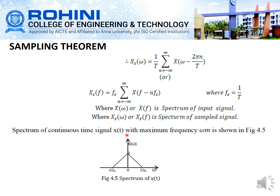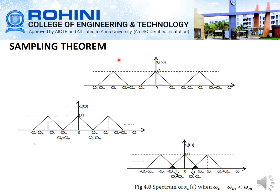The spectrum of the continuous-time signal x(t) with maximum frequency ω_m is shown in the figure. This spectrum has maximum frequency ω_m, with components at −ω_m to +ω_m and −ω_s to +ω_s. When sampling satisfies fs greater than or equal to 2·fm, we can reconstruct the signal at the receiver end. If this condition is not satisfied, we get an aliasing effect, as shown in the corresponding figure.